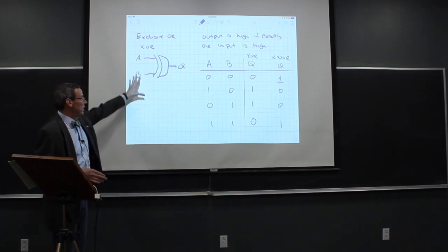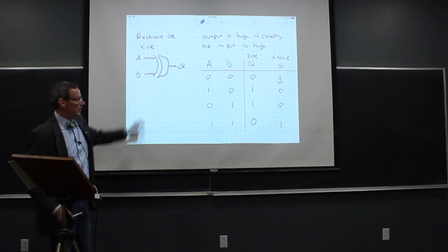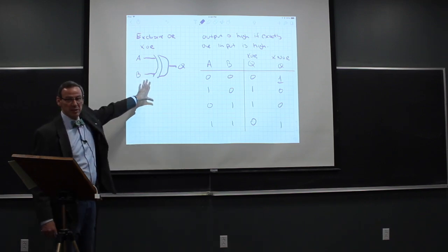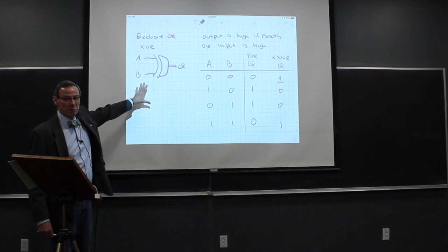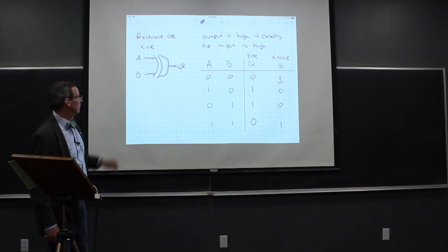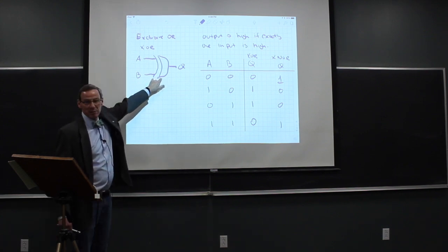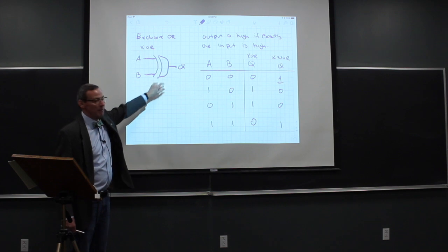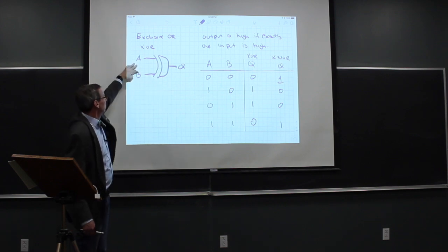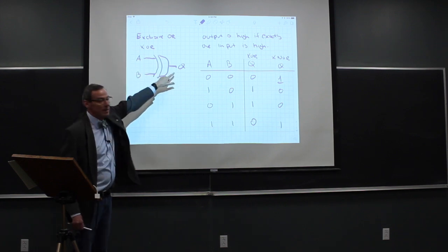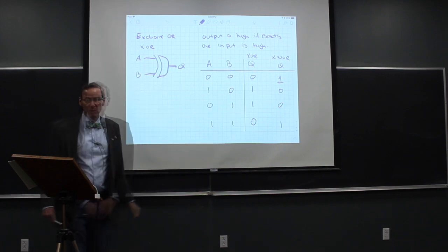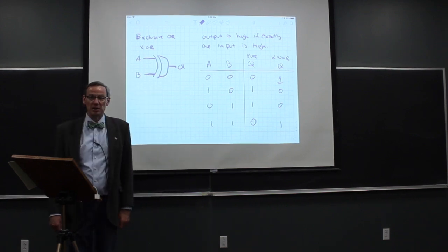So those are the basic logic units. When working with digital electronics, these are actually built into integrated circuits with inputs A and B and output Q to perform logical operations.